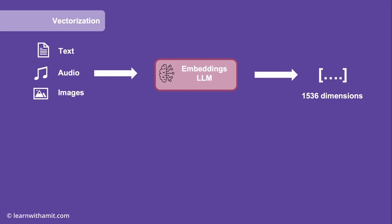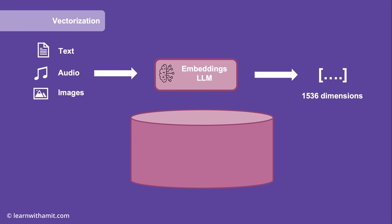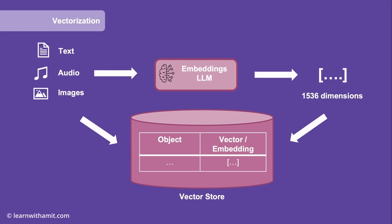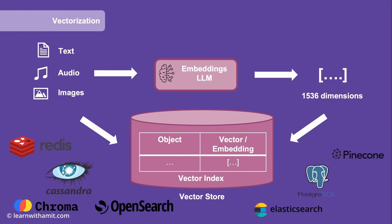In a RAG system, we store these objects and their vector representations in a database called a vector store. These vector stores have a special type of index that indexes items based on their vector representations — this index is called a vector index. Most commonly used databases you're probably already familiar with support vector indexes, like Postgres, Cassandra, Elasticsearch, and OpenSearch. There are also databases specifically designed for storing vector embeddings, like Pinecone and Chroma.